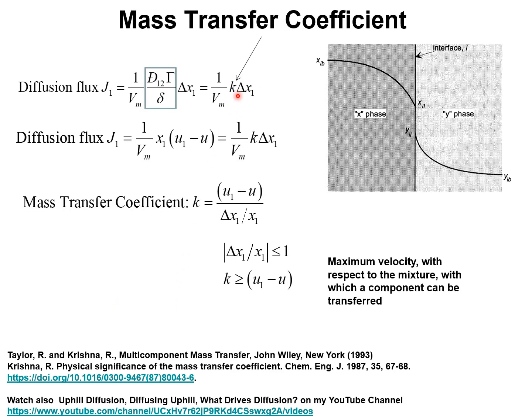For interphase mass transfer between two adjoining thermodynamic phases, the X-phase and the Y-phase, we may define the mass transfer coefficient in the X-phase by this expression where we assert that the diffusion flux is proportional to the difference in the composition between the bulk and the interface. And that difference we denote as delta X1.